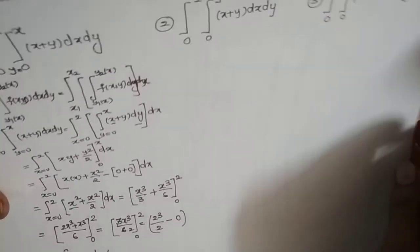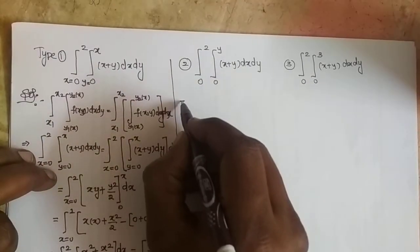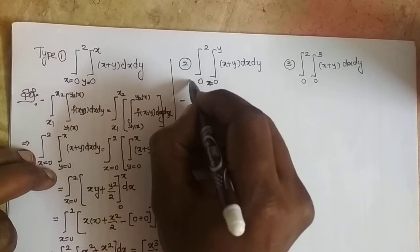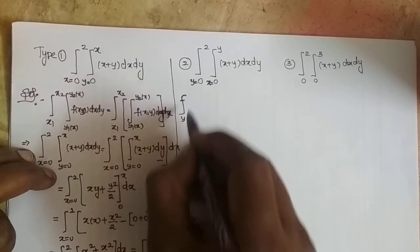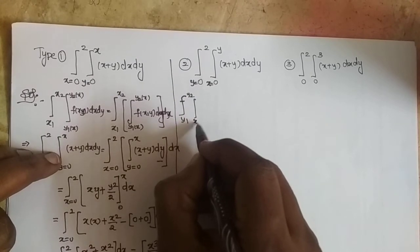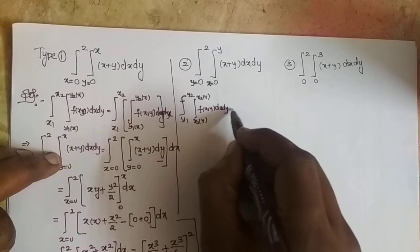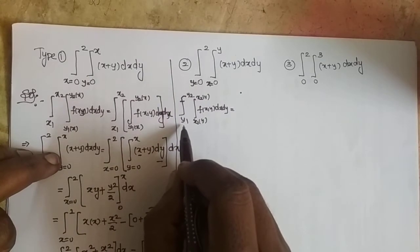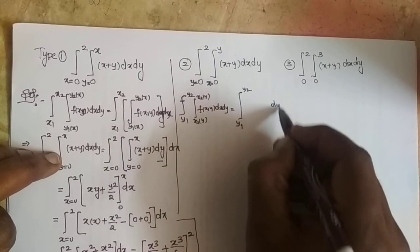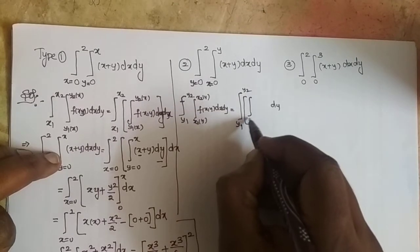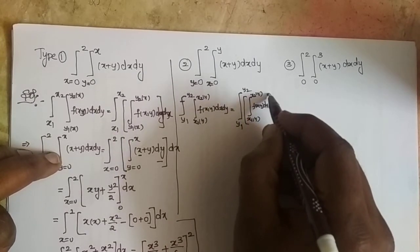Likewise, moving to Type 2. Here we identify the limits: this belongs to x, this belongs to y, so this is Type 2. The Type 2 general form is: integral y1 to y2, integral x1(y) to x2(y), f(x, y) dx dy. Y's are taken as boundaries, so we integrate with respect to x first, then last integrate with respect to y.